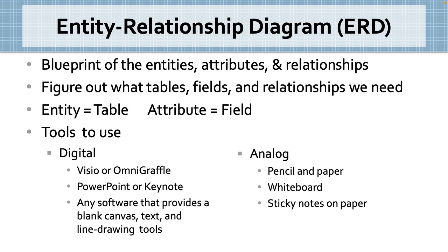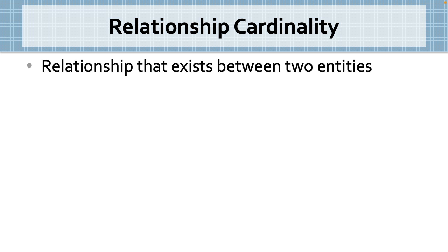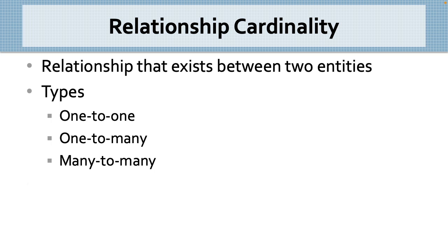The only part missing from our classical music and kindergarten ERDs is the relationship lines. For that, we need to learn how to determine relationship cardinality, or the type of relationship that exists between two entities. There are three types: one-to-one, one-to-many, and many-to-many.